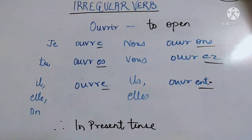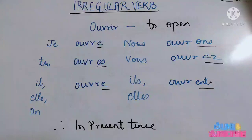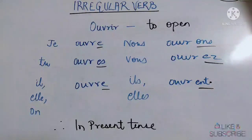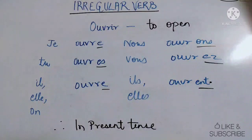Let's conjugate the next verb 'ouvrir'. Remove the infinitive part — remove the I-R. We are left with the stem O-U-V-R. Let's do the conjugation. 'J'ouvre' — spelling is O-U-V-R-E. 'Tu ouvres' — O-U-V-R-E-S. 'Il ouvre' — O-U-V-R-E.